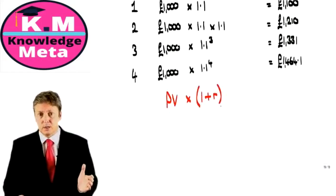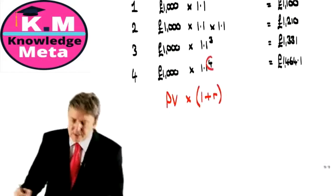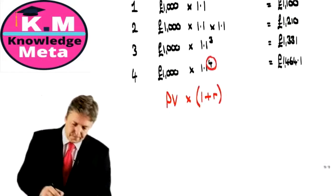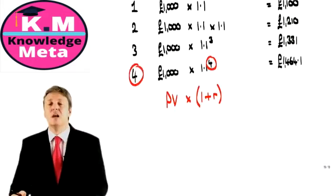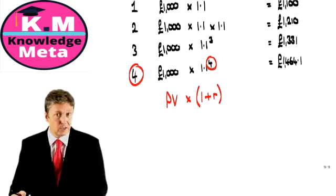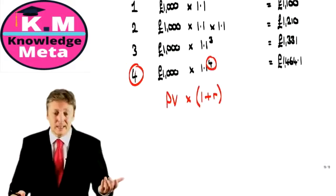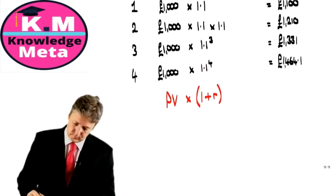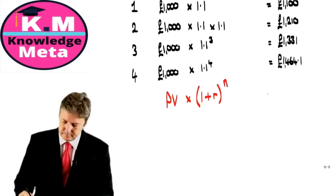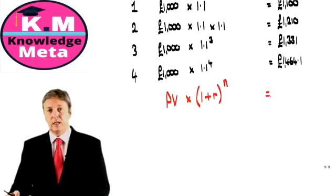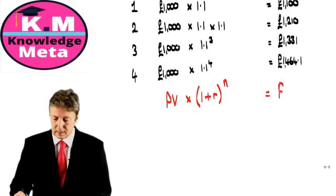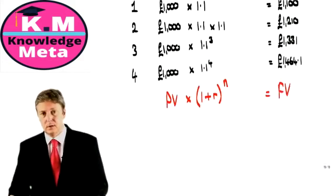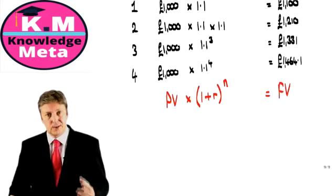1 plus the rate of interest. And what does this 4 represent? Well, yes, 4 represents the number of accounting periods. Pardon me. The number of compounding periods. Normally, in our case, years. N. The present value multiplied by 1 plus R to the N gives us the future value. It's as simple as that.